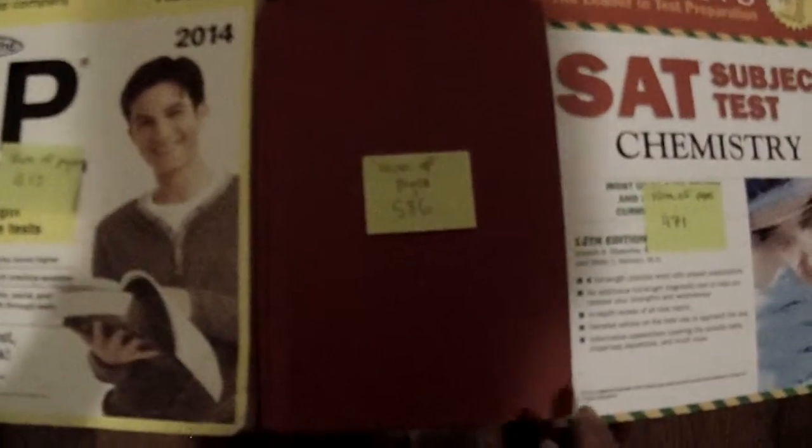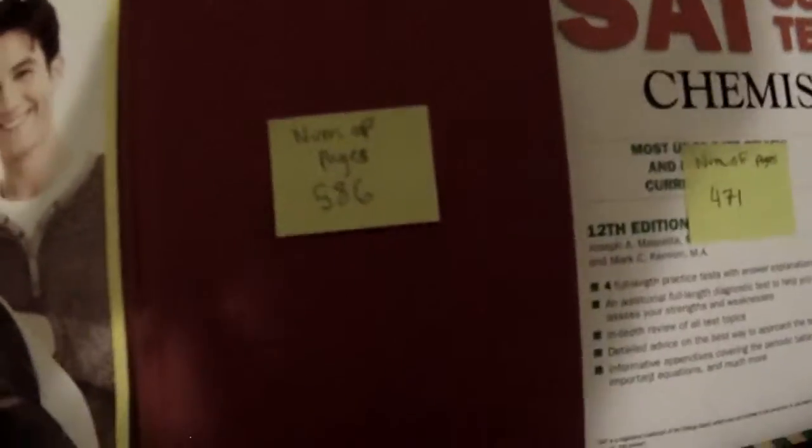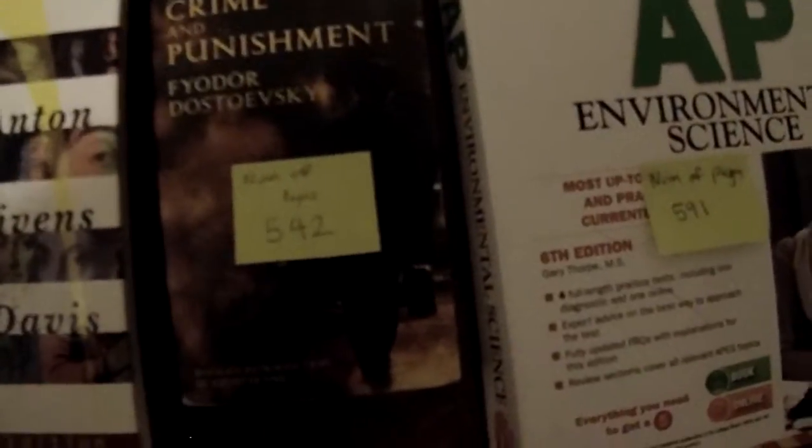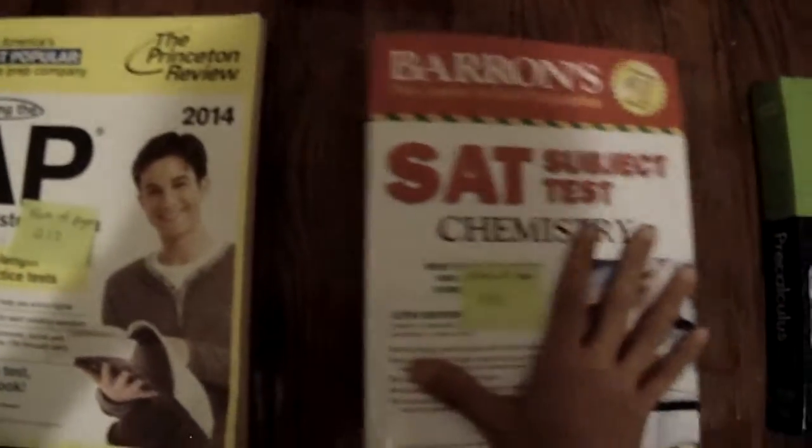Now we have three books sorted. On the fourth pass, Mark and Athena at 586 is our fourth book. SAT Chemistry at 471 is less than 586, so that becomes our minimum. Pre-calc at 1,031, calculus at 893, Crime and Punishment at 542, AP Enviro at 591, and biology at 1,420 — none of these change the minimum. So we swap: we place Mark and Athena where the chemistry textbook was. Now four books are sorted.